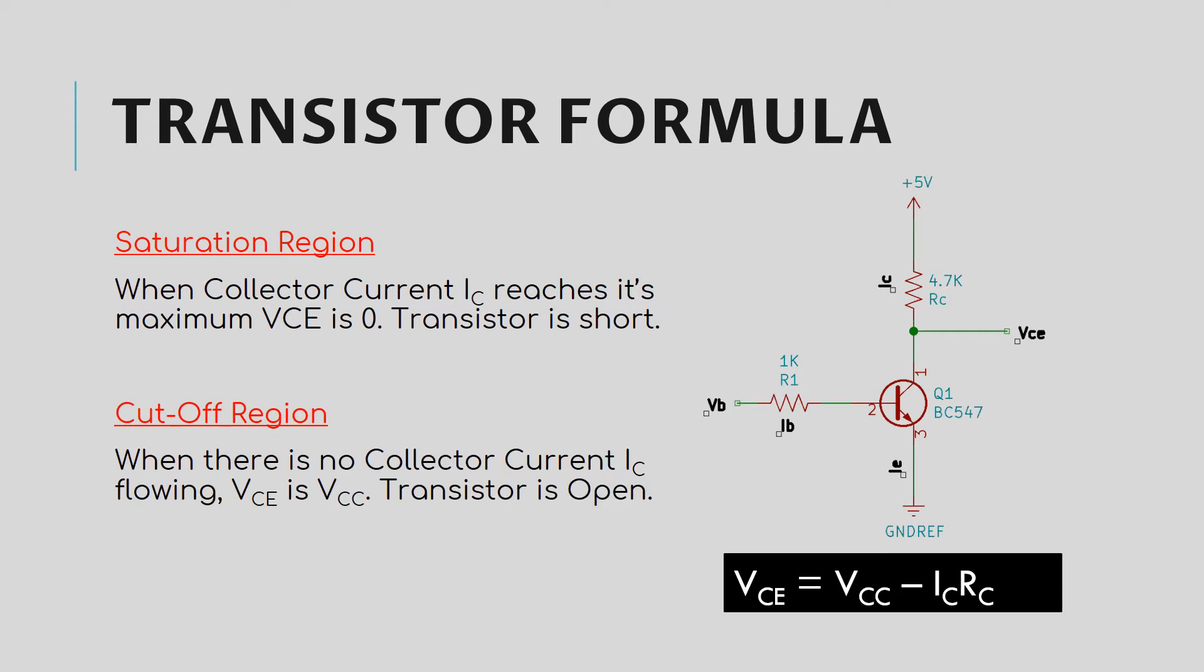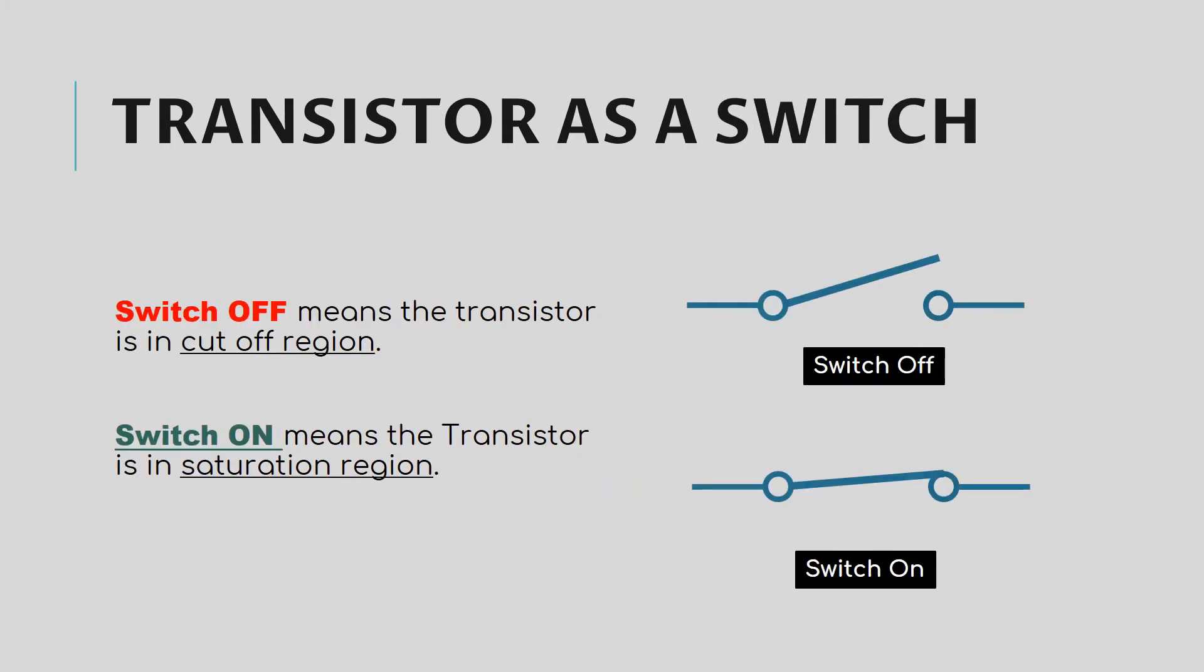In cutoff region when IC becomes almost zero, this VCE becomes equal to VCC. That means we are getting full output voltage so transistor is not conducting at all. So transistor is open. Basically if I sum up the whole thing, then just remember switch off means the transistor is in cutoff region, switch on means the transistor is in saturation region.